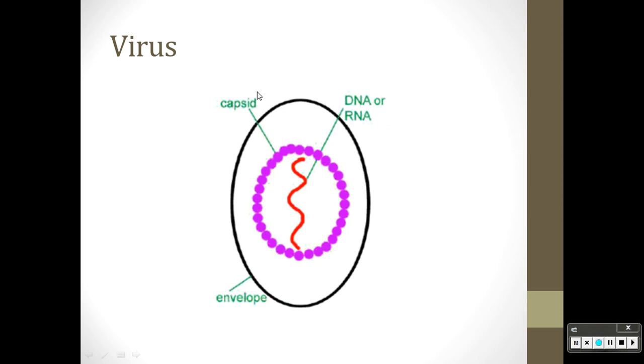The DNA, this capsid is a protein coat, and the envelope allows the virus to get into another cell. This little piece of DNA finds its way into the nucleus and it just takes over the cell. It makes the cell do what it wants it to do.